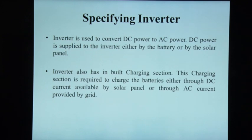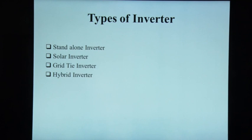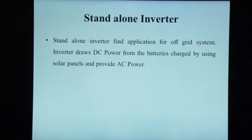An inverter is used to convert DC power to AC power. DC power is applied to the inverter either by the battery or by the solar panel. The inverter also has a built-in charging section, which is required to charge the battery either through DC current from the solar panel or through AC current from the grid. There are various types of inverters: standalone inverters, solar inverters, grid-tie inverters, and hybrid inverters.